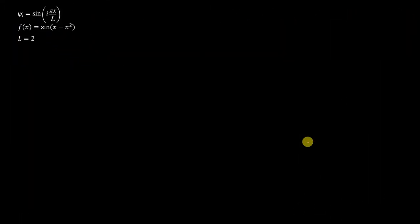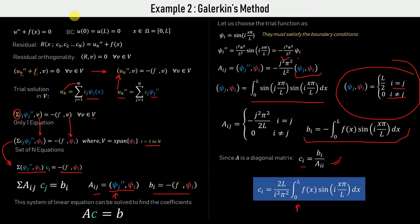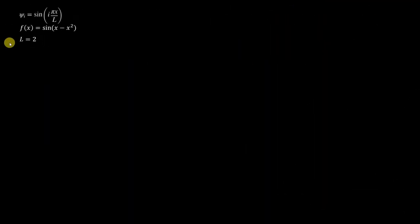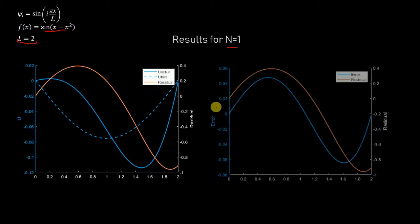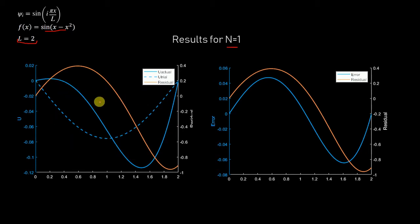Let's see the results when psi_i equals sine(i*pi*x/L) and the function f(x) is a randomly chosen expression. The domain length is 2, varying from 0 to 2. For n equals 1, we're looking in a one-dimensional space with basis function sine(pi*x/L). The trial solution is far off from the actual one, and the residual and error are quite large relative to the function's magnitude of around 0.6.